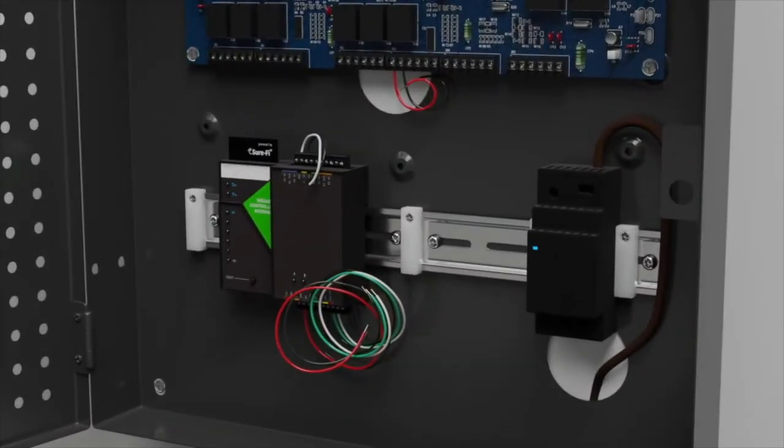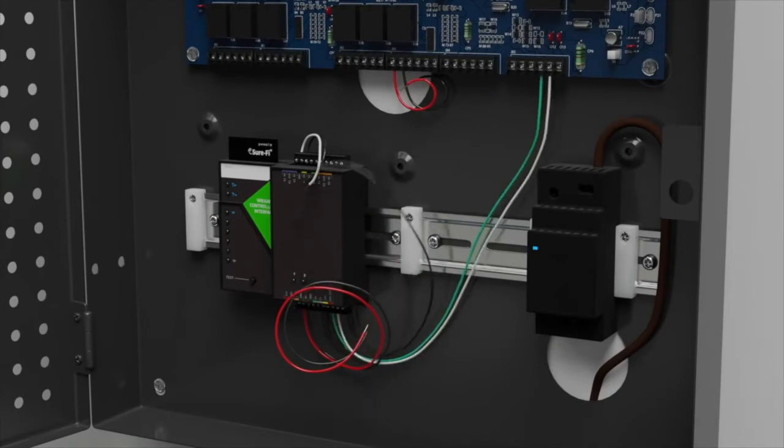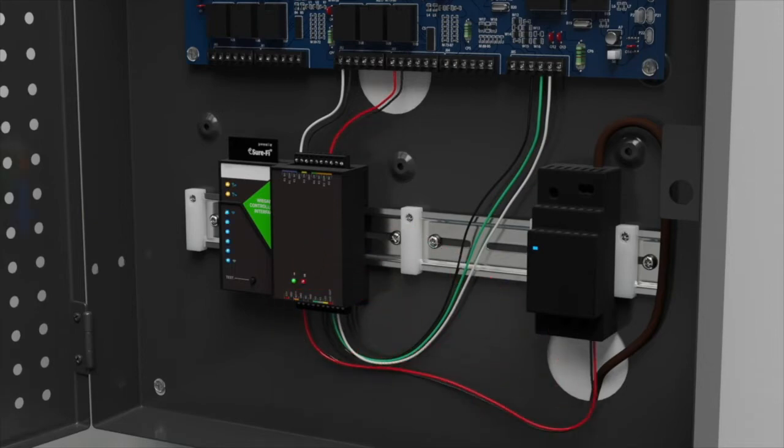On the controller interface, connect the Wiegand D0, D1, and ground on the bottom of the SureFi to the Wiegand inputs on your control panel. Connect the relay outputs from the panel to the relay inputs R1, N, or R2, N, and ground on the top of the SureFi controller interface. Connect 12 volts DC power.